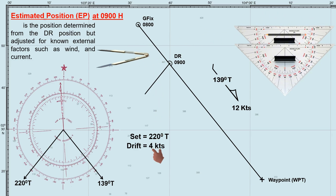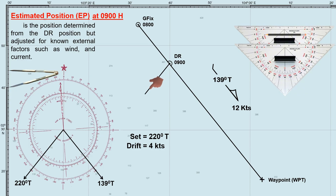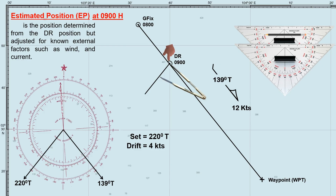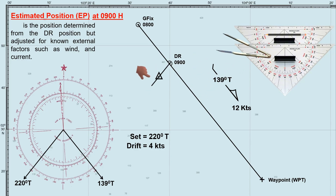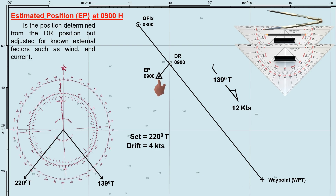These 4 nautical miles represent the distance the current has pushed the ship during this time. Now, lay the divider from the DR position at 0900 hours along the tidal vector. This point is the ship's estimated position at 0900 hours, marked by the standard symbol — a triangle with a dot inside. Mark the tidal vector with 3 arrows pointing toward the direction of the tidal current. This is the ship's movement relative to the ground due to the effect of tidal current.